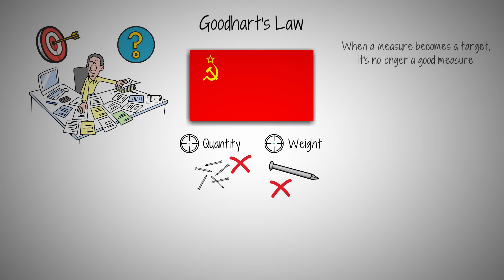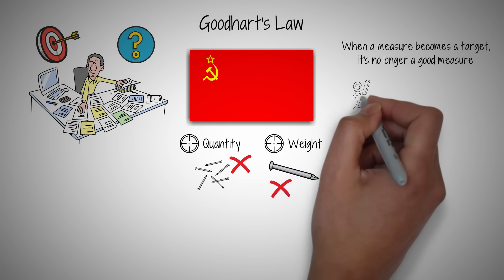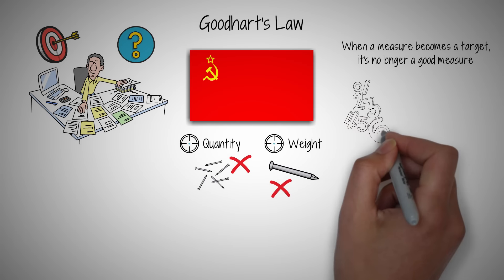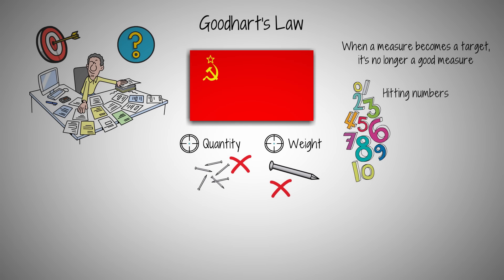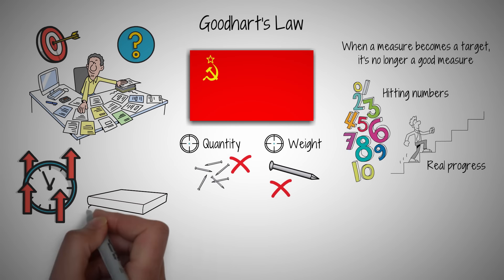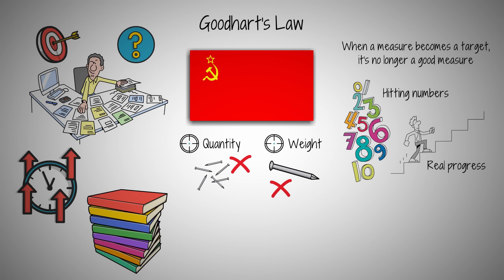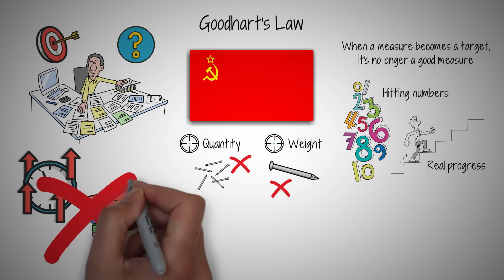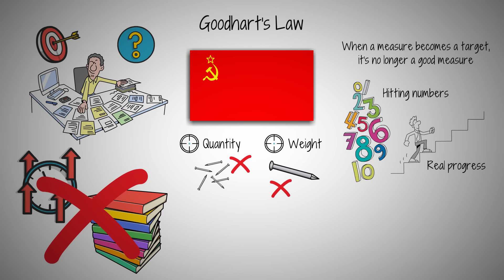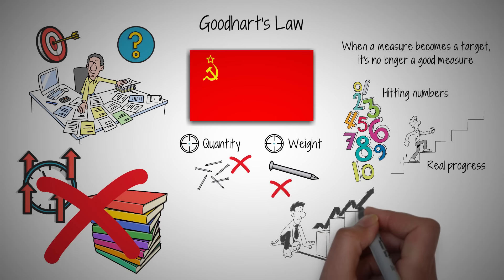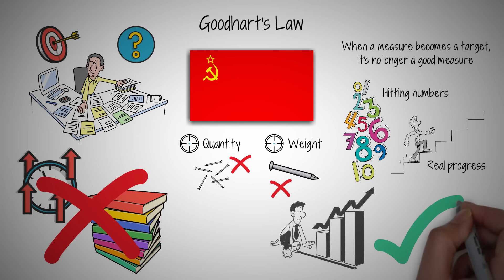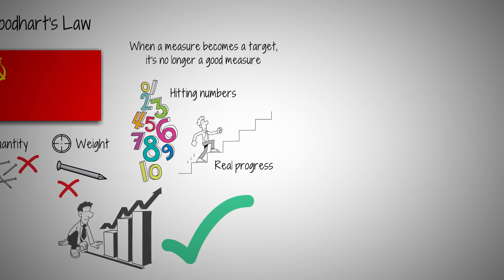Goodhart's Law states that when a measure becomes a target, it's no longer a good measure. Because we then start to game the system, focusing on hitting numbers rather than achieving real progress or quality. By focusing on numbers, we forget true goals. How can this benefit us? Don't just count hours studied or books read. Aim for understanding and applying what you learn. By choosing meaningful goals over mere numbers, we achieve real growth. Goodhart's Law reminds us, it's not about how much we do, but the value it brings.